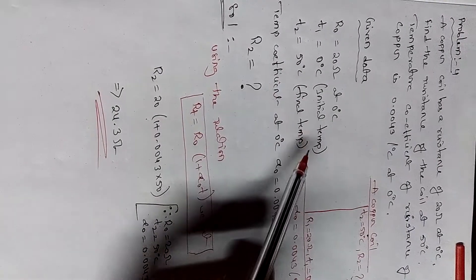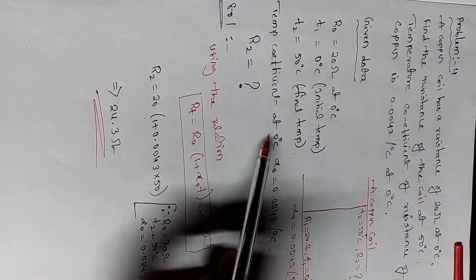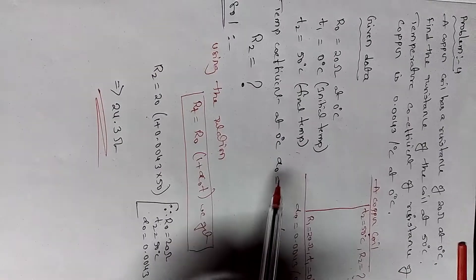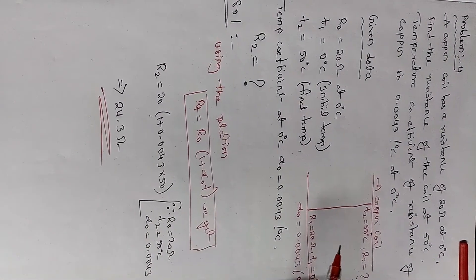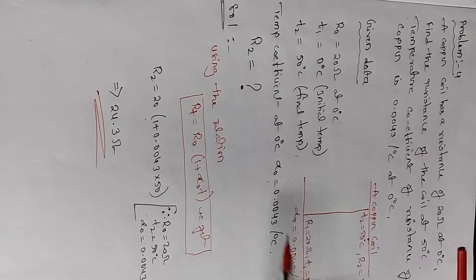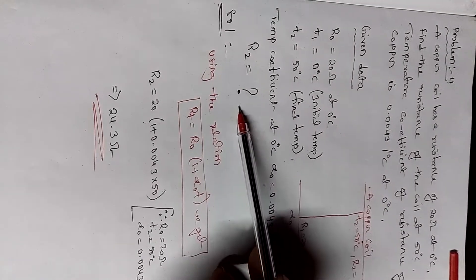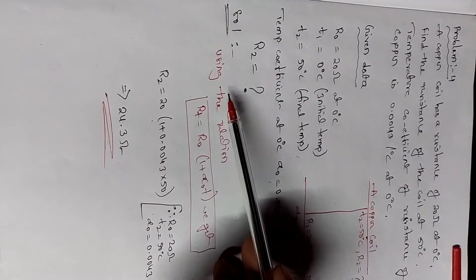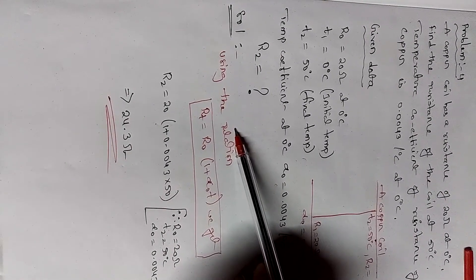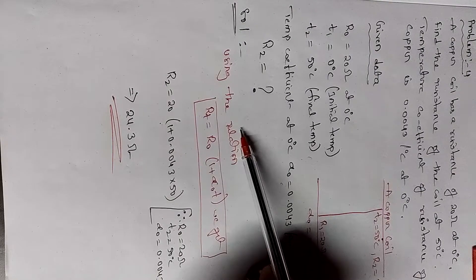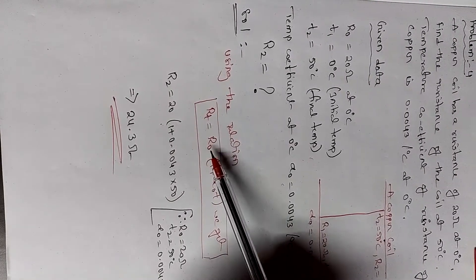T2 equal to 50 degrees, the final temperature. The temperature coefficient at zero degrees, alpha naught, equals 0.0043 per degree centigrade. Find out R2. By using the relation we've solved, total resistance Rt equals R naught times 1 plus alpha naught T.